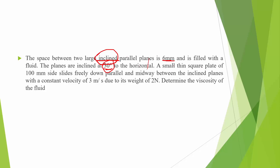A small thin square plate — since it is given as a thin plate, we will not consider its thickness. A square plate of 100mm side slides freely down, parallel and midway between the inclined planes, with a constant velocity of 3 meters per second due to a weight of 2N. We need to determine the viscosity of the fluid.